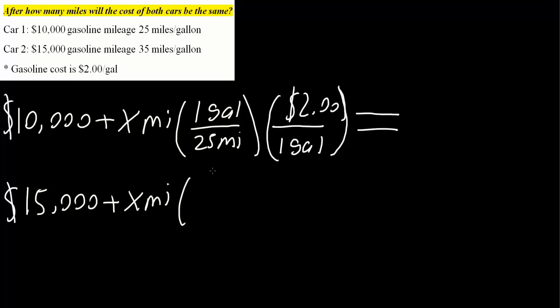In our case for this one, it's going to be 1 gallon is 35 miles. So 1 gallon is 35 miles, and we know that 1 gallon is $2.